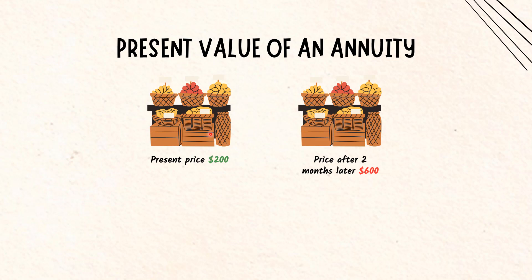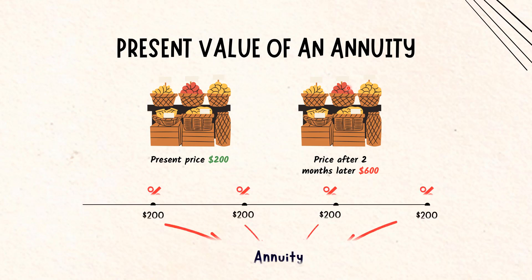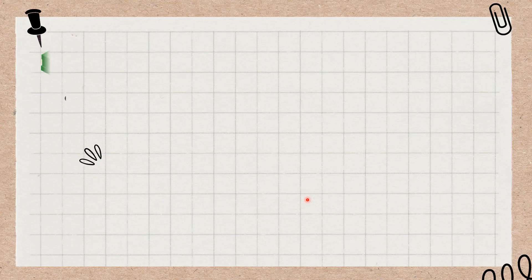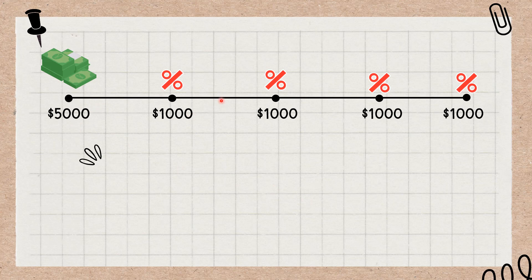An annuity is a financial product that provides a stream of payments to an individual over a period of time, typically in the form of regular installments. Annuities can be either immediate or deferred, depending on when the payments begin. Immediate annuities start paying out right away, while deferred annuities have a delay before payments begin. Because of the time value of money, money received today is worth more than the same amount in the future because it can be invested in the meantime. By the same logic, $5,000 received today is worth more than the same amount spread over five annual installments of $1,000 each.